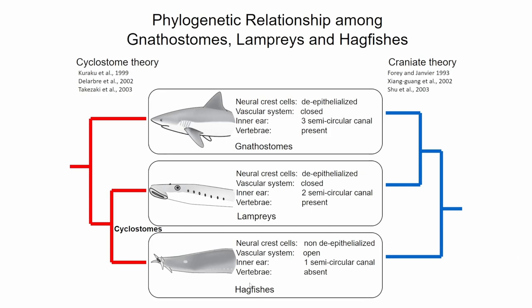The cyclostome theory, estimated early on, proposes that lamprey and hagfish form a monophyletic group — supported by molecular data. The craniate theory comes from morphology and fossil data, placing hagfish at the basal position because it looks really primitive. Nowadays we know the cyclostome phylogenetic tree is not a problem, but 'primitive' is a word that causes misunderstanding — 'ancestral' is much better.